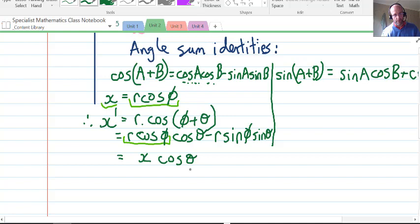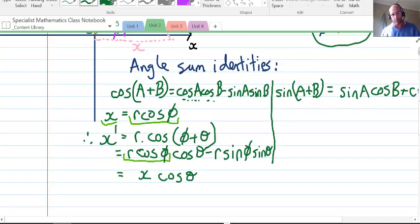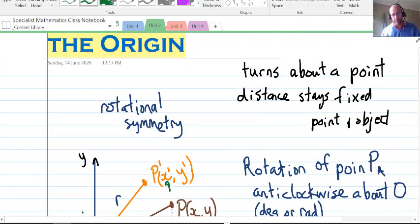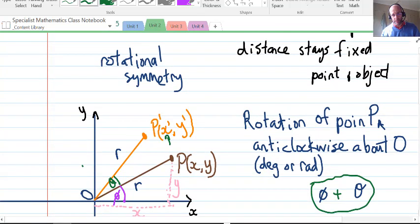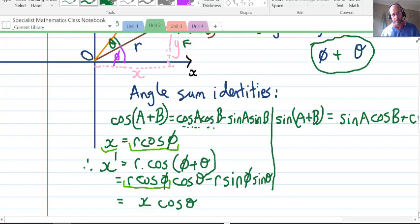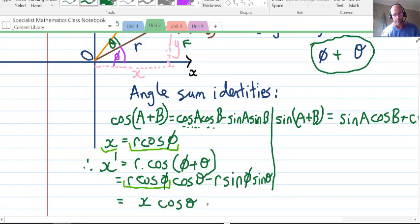We can also see from the diagram that y is r sinφ, using the same process with the right angle triangle, opposite over hypotenuse rearranged.